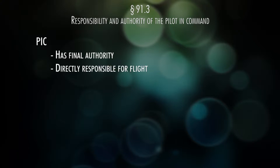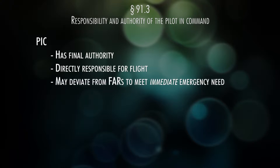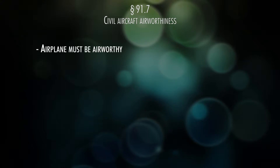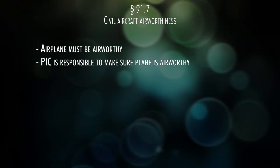91.3: The PIC is the final authority and is directly responsible for the operation of the aircraft. If there's an emergency and you need immediate action, you can deviate from any rule in Part 91 to meet that emergency. 91.7 says that the airplane has to be airworthy when you fly it, and you as the PIC are responsible for determining the airworthiness of the airplane.